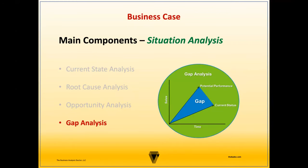The first part of the evaluation measure is the metric description. This refers to a detailed explanation of how a specific measurement will be used to assess the particular aspect of the proposed project or solution. It provides clarity and context to the stakeholders about what the metric represents and why it's relevant to the evaluation process. Metric descriptions ensure a shared understanding of how success or performance will be quantified.